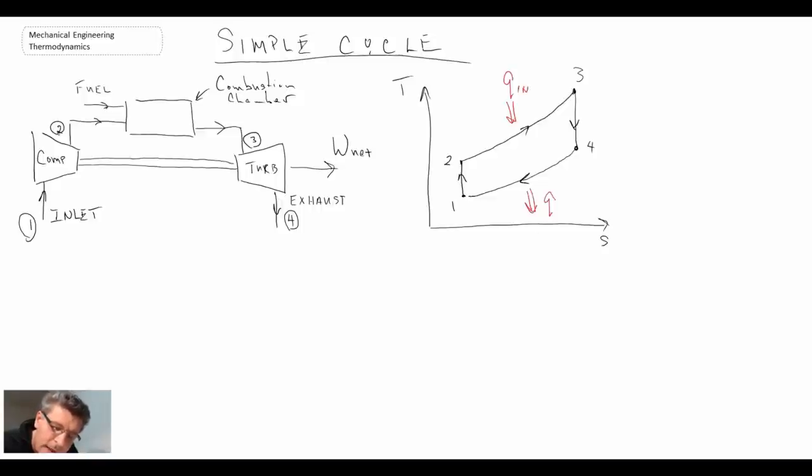So from two to three that's where we have heat addition QN. And then from four to one that is where we have heat rejection or exhaust, and that is Q out. So that is the Brayton cycle or the simple Brayton cycle on a TS diagram. Next let's take a look at it on a PV diagram.